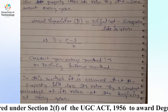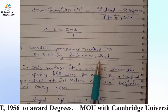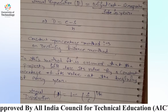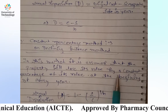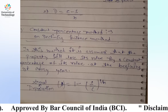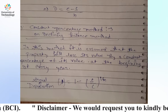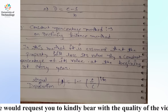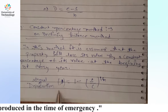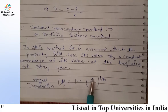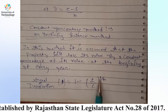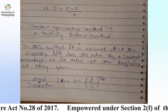The second method is the Constant Percentage Method, also called the Declining Balance Method — remember both names. In this method, it is assumed that the property will lose its value by a constant percentage of its value at the beginning of every year. The formula is: depreciation percentage D = 1 minus (S/C) to the power of 1/N, where S is scrap value, C is original cost, and N is life in years.